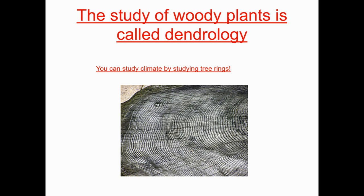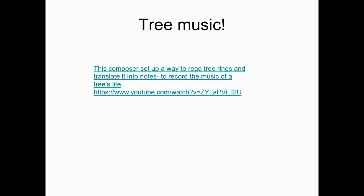The study of woody plants is called dendrology, and you can study climate by studying tree rings. In a really wet year, a plant makes more xylem; in a dry year, less — so ring size is determined by water availability. There's even a composer who set up a way to read tree rings with a laser, translate those rings into musical notes, and make a recording of a tree.